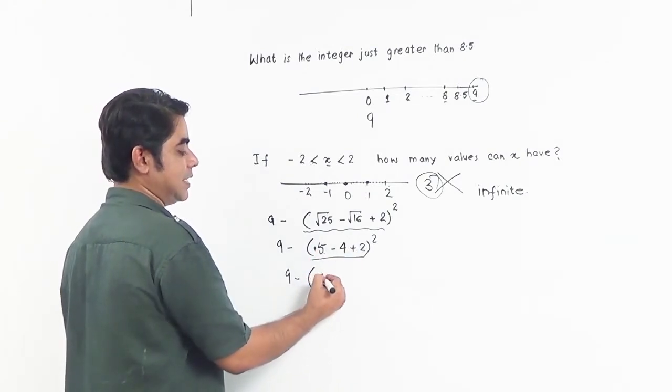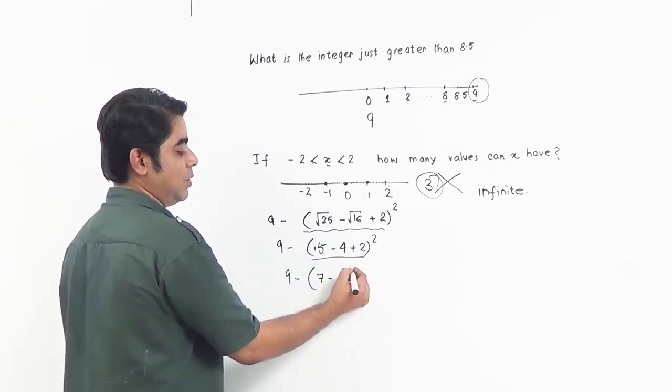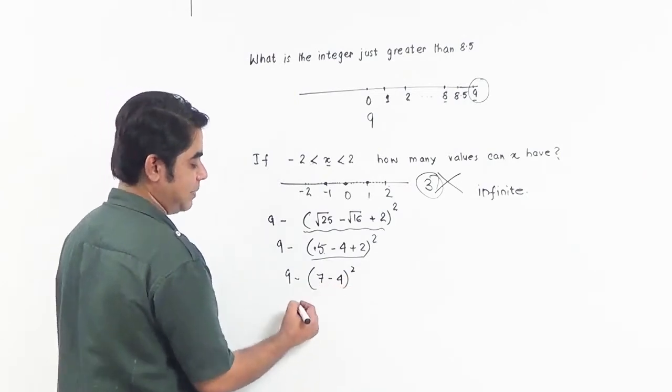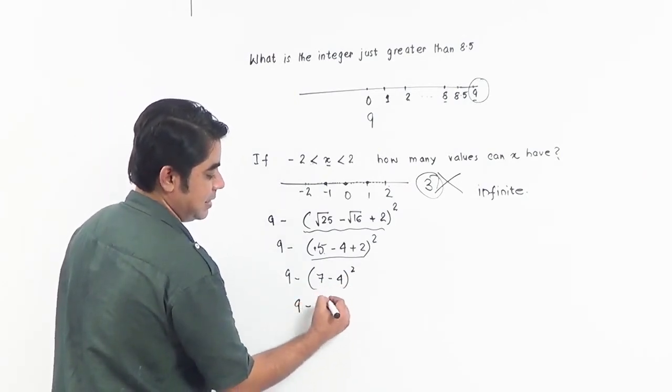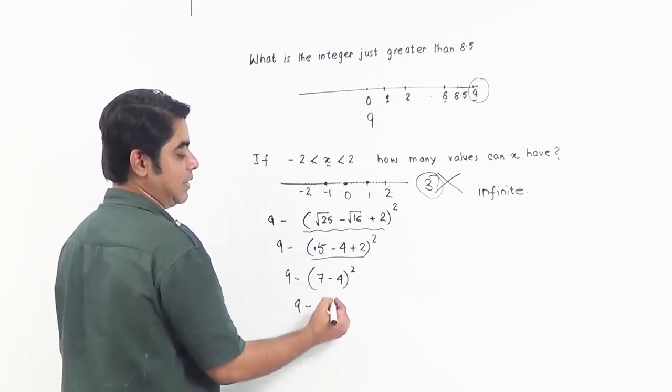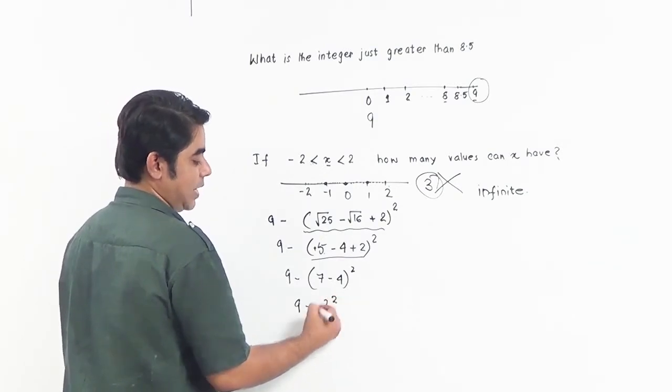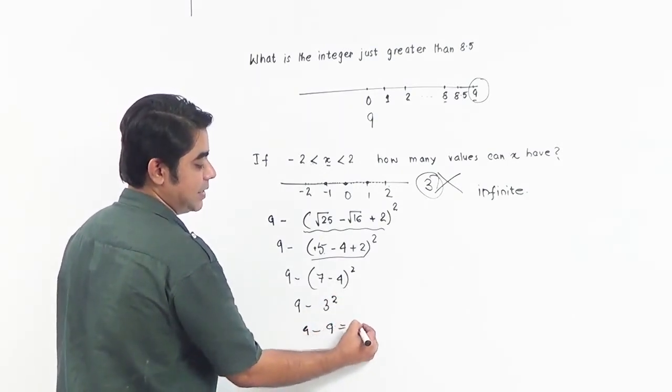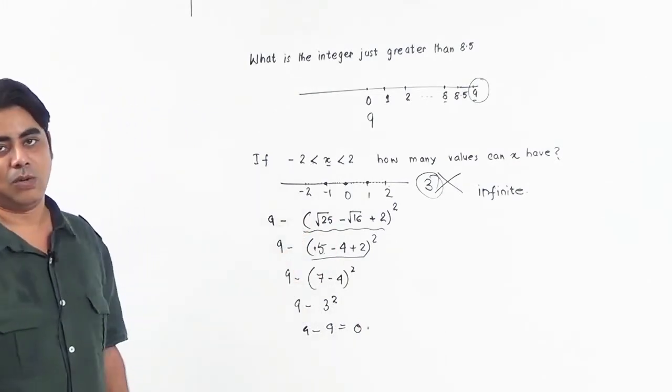7 minus 4, whole square. Now what is left in the bracket is just 3, and we remove the bracket. We have the value of the bracket: 3 squared. We simplify to 9 minus 9, which gives us the answer as 0.